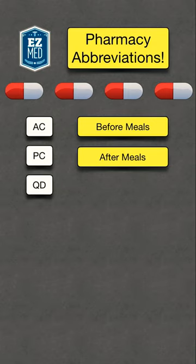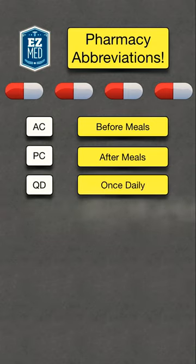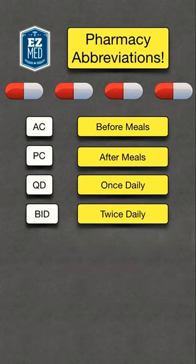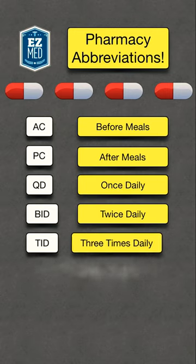Next, we have QD, which stands for once daily. Moving on to BID, this stands for twice daily. Then we have TID, which stands for three times daily.